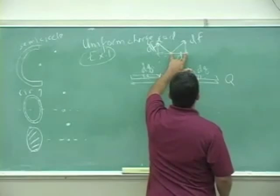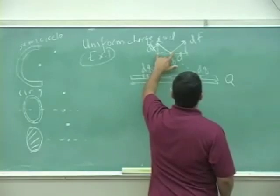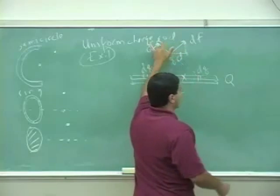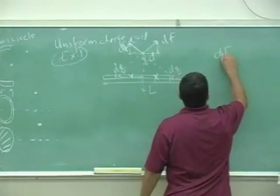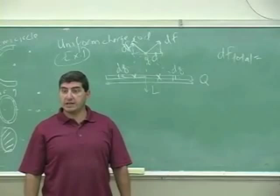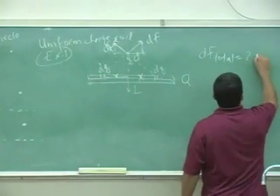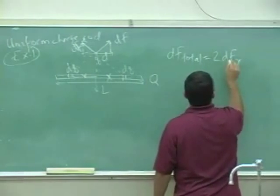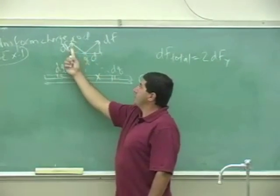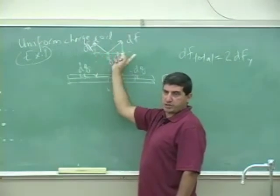This thing, df cosine theta, is going to cancel the df cosine theta. So the only thing that will survive is the y component, this guy and this guy. So df total is going to equal 2df times the y component, 2dfy, because the y component of df plus the y component of the other df, they will add up and they'll be twice because they're equal to each other.